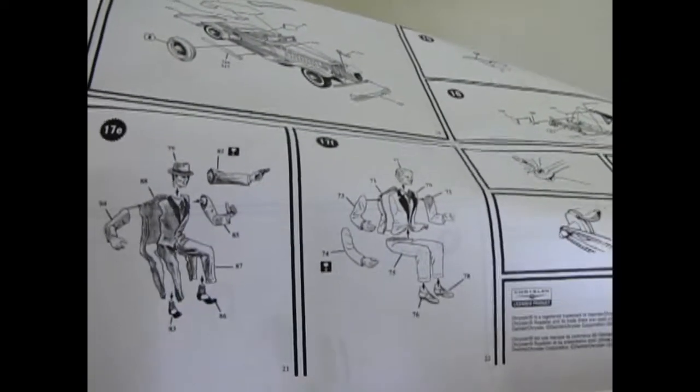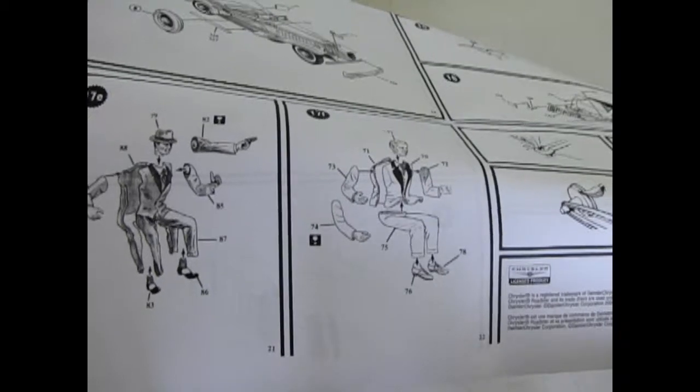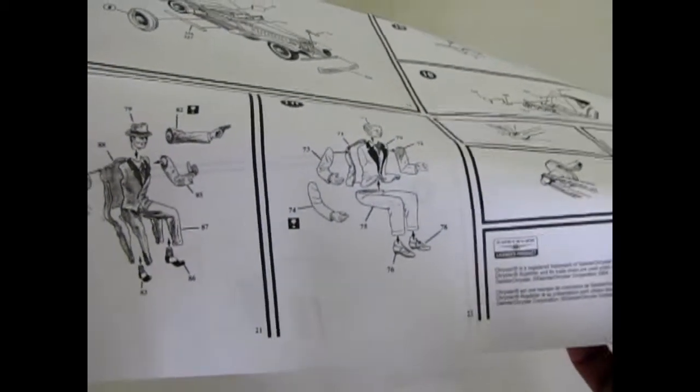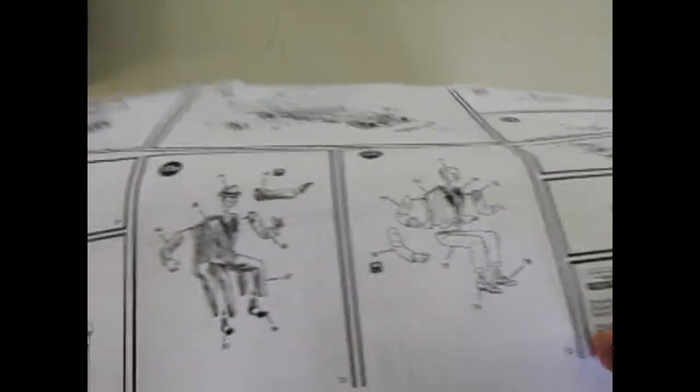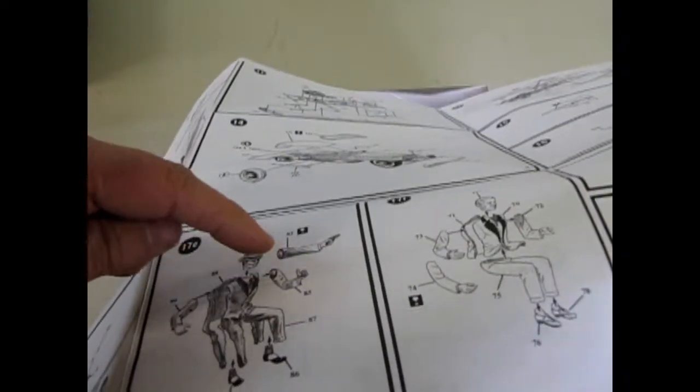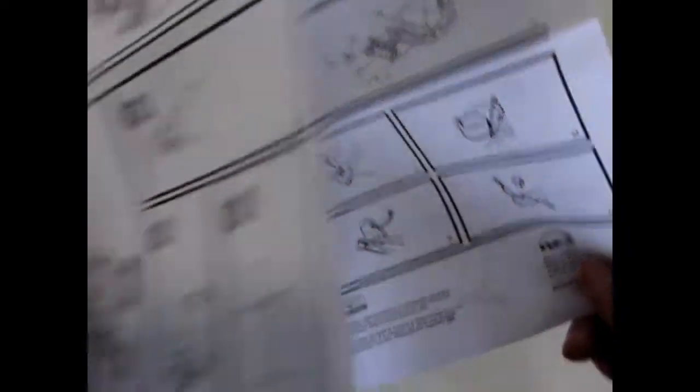Then you get two figures, one that's sitting, well both are sitting down, and both can be positioned to be driving the car, with the one guy of course having the handgun to shoot at the police or whoever. I believe these are supposed to be gangsters.